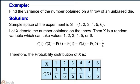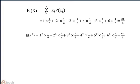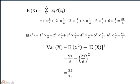The probability distribution of x is as shown. E(x) equals summation from i equal to 1 to n of xi times p(xi), which comes out to be 21 by 6. And E(x squared) comes out to be 91 by 6. Therefore, using the formula for variance of x, we get its value as 35 by 12.